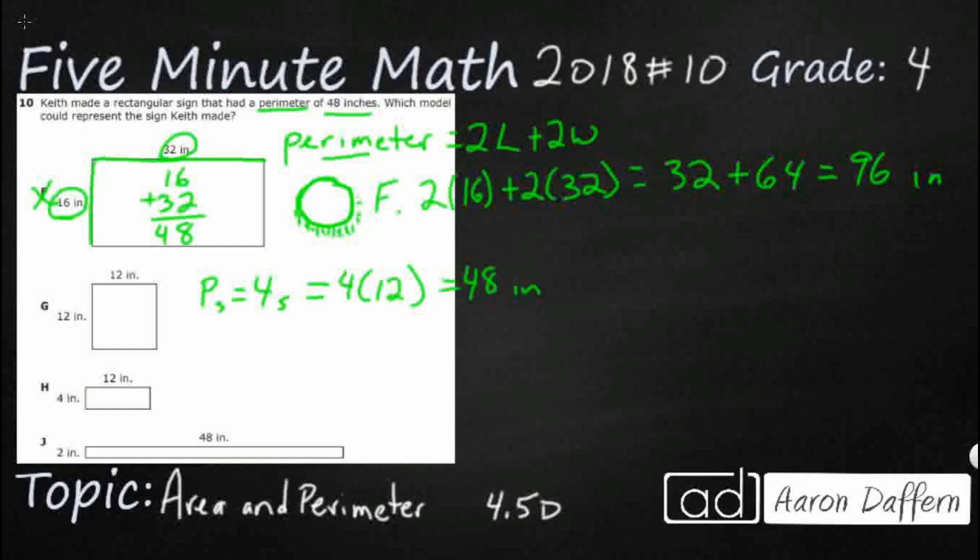Just to show you, we can still do this one. If we wanted to, we can do double the length plus double the width. So double 12 plus double 12. That's going to equal 24 plus 24. That still equals 48. Either one works, but that's looking pretty good.